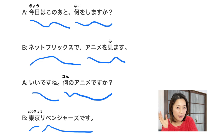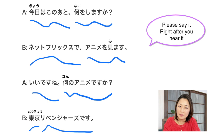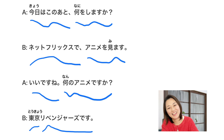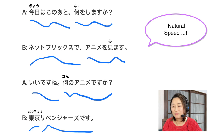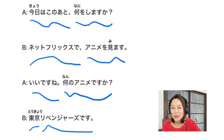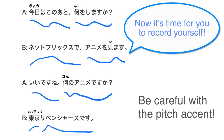And this time, let's do shadowing — say it right after you hear it and imitate the pitch accent, intonation, and pronunciation, everything. 今日はこの後、何をしますか。 ネットフリックスでアニメを見ます。 いいですね。 何のアニメですか。 東京リベンジャーズです。 Now at natural speed: 今日はこの後、何をしますか。 ネットフリックスでアニメを見ます。 いいですね。 何のアニメですか。 東京リベンジャーズです。